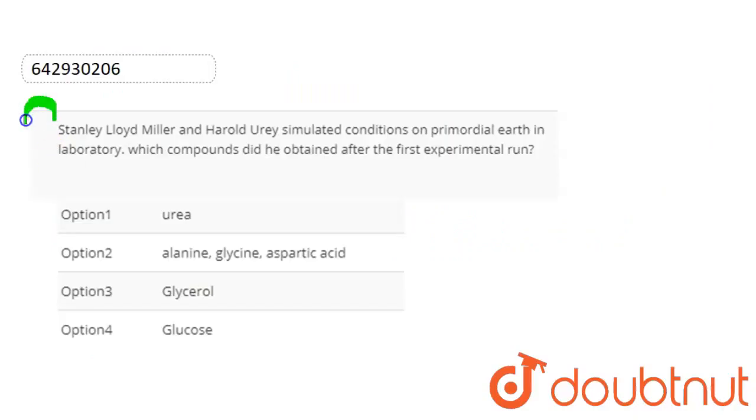Hello, students! Let's start the question. Question here is: Stanley Lloyd Miller and Harold Urey simulated conditions on the primordial earth in laboratory. Which compounds did he obtain after the first experimental run?